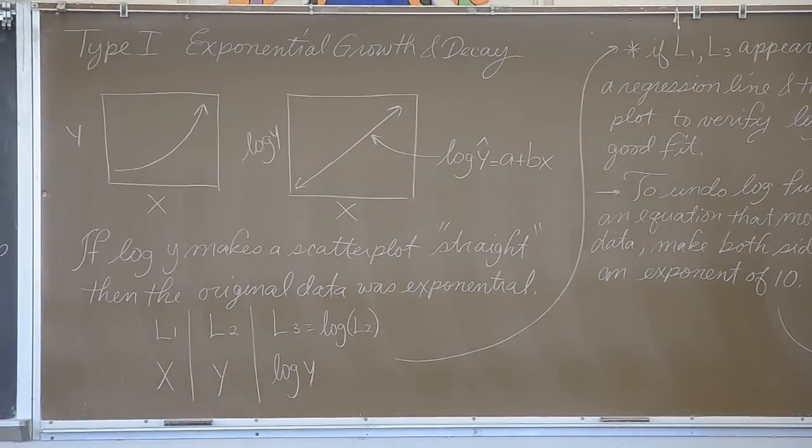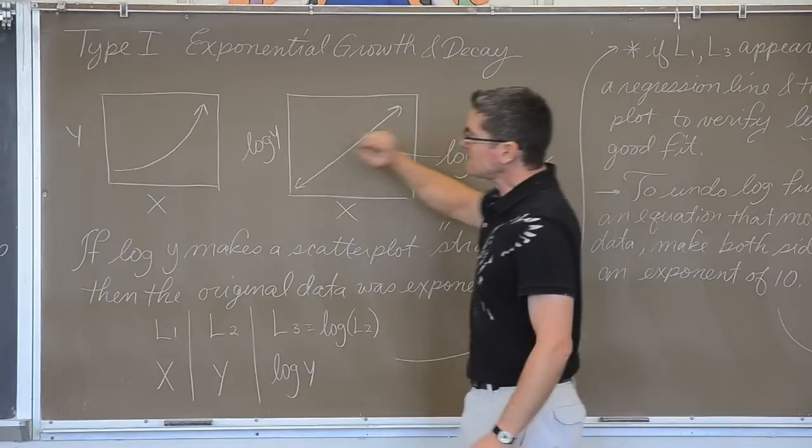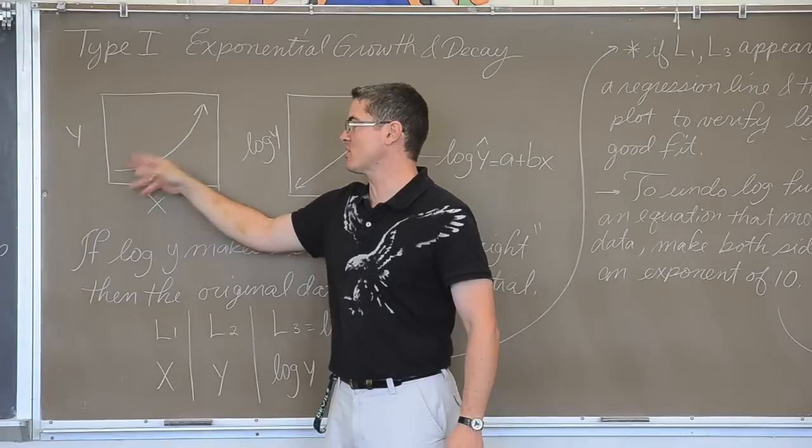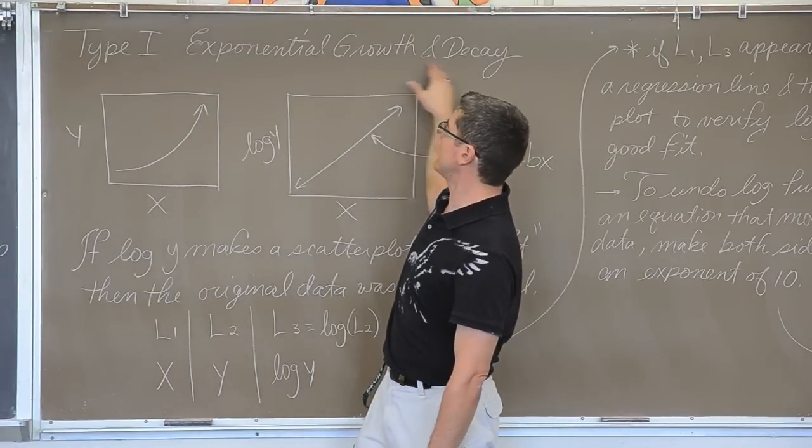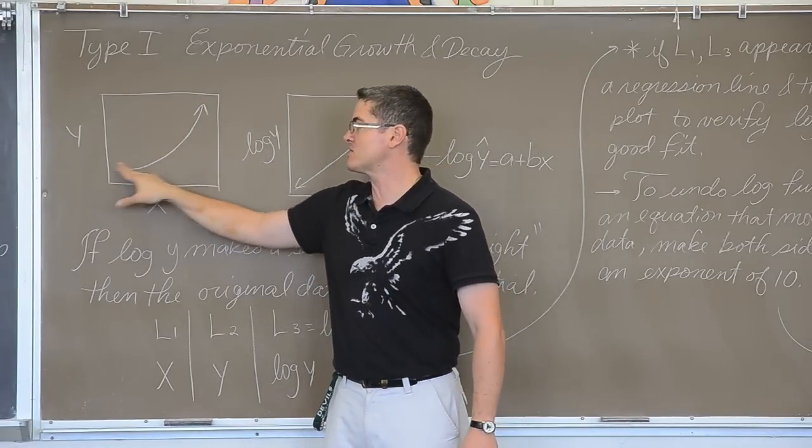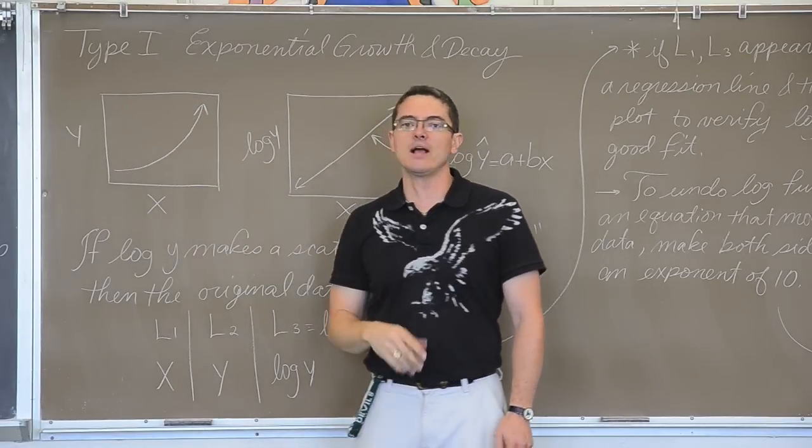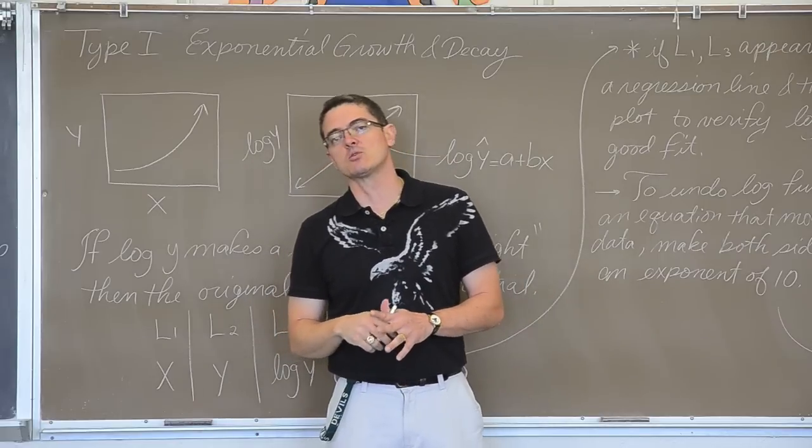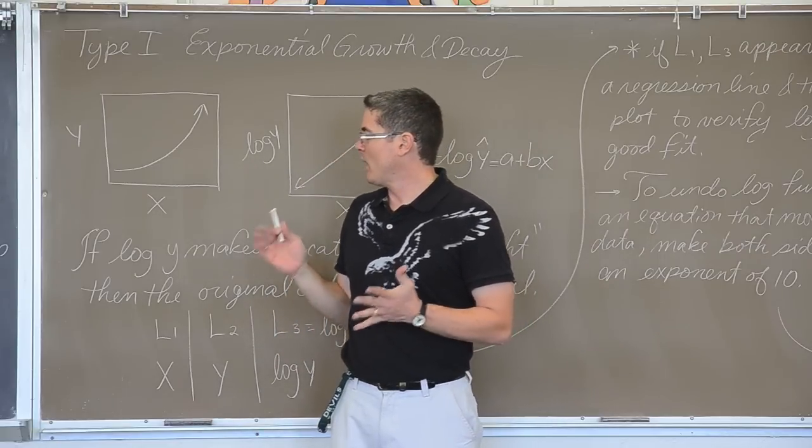Type 1, exponential growth and decay. If you make a scatter plot and you notice that the pattern is curved, now we're talking about exponential growth and decay, so if my y values are getting larger with my larger x's, of course that's going to be exponential growth.